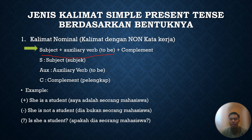S itu sebagai subject, auxiliary sebagai kata kerja bantu, kemudian complement itu pelengkap — misalnya objek ataupun kata keterangan waktu maupun kata keterangan tempat. Kalau anda bisa lihat di contoh disini, tidak ada kata kerja. Subjectnya itu 'She', auxiliary verbnya itu 'is', kemudian ada complement. Makanya disebut dengan kalimat nominal — dalam kalimat ini tidak ada kata kerja, yang ada hanya auxiliary verb atau to be. Contohnya: She is a student.